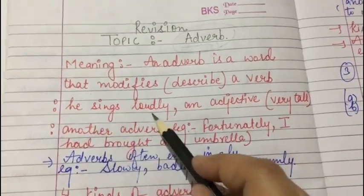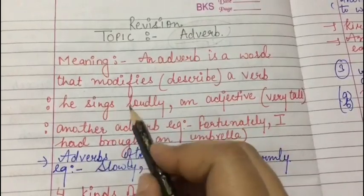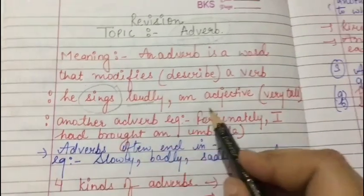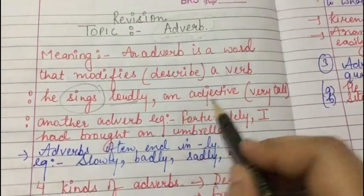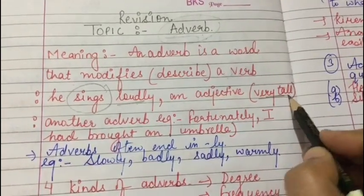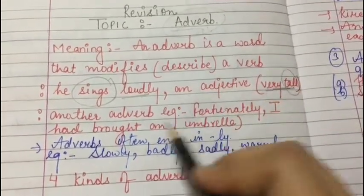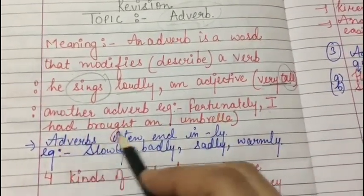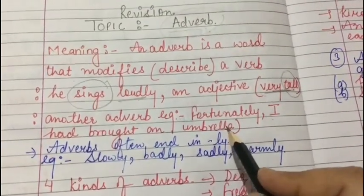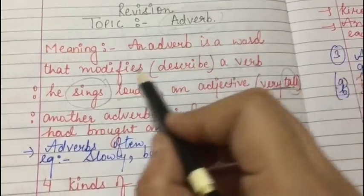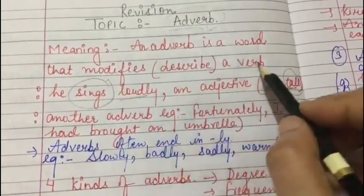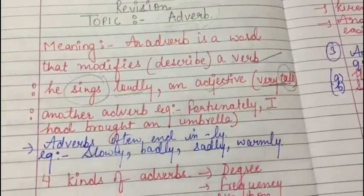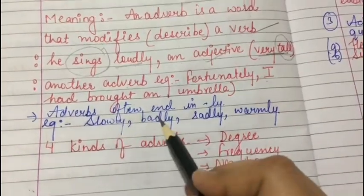For example, if I say 'he sings loudly,' here 'loudly' is the adverb because it clarifies how he sings. An adverb also modifies an adjective — for example, 'very tall' tells how tall. And it can also modify another adverb — for example, 'fortunately I had bought an umbrella.' So basically an adverb is a word that modifies, clarifies, or describes a verb, an adjective, or another adverb.